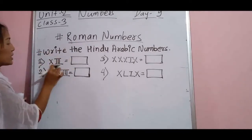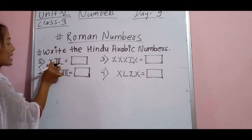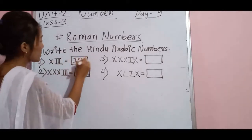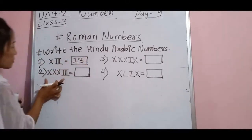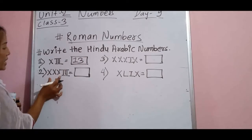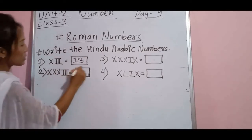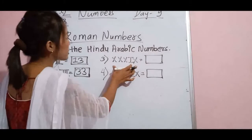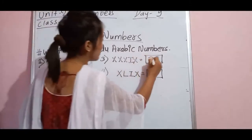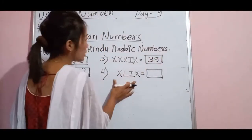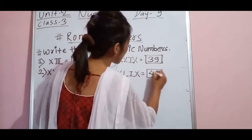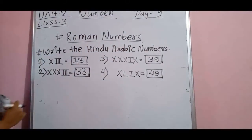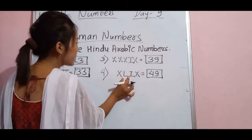Here is X3 — so X means 10 and 3 means 3, so that is 13. Wait — here is X3 meaning 10 and 3: 13. After that, number 2: XXX — this is 33. After that here is 39. After that here is 49. You were thinking that L means 50, isn't it?